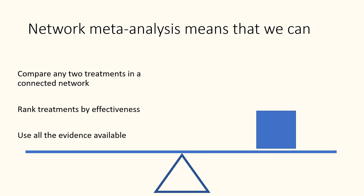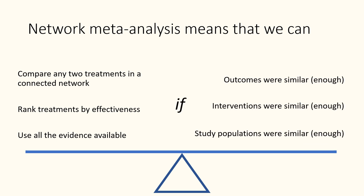Network meta-analysis allows us to compare any two treatments in a connected network, rank treatments by effectiveness, and use all of the evidence available. However, the outcomes measured in the studies need to be similar — for example, measured at similar time points. The treatments or interventions need to be similar in the studies that include them, for example similar doses of drugs or similar duration of counselling sessions. And our study populations need to be similar enough that we wouldn't expect different responses to treatments, for example due to severity of the condition or past treatment history.